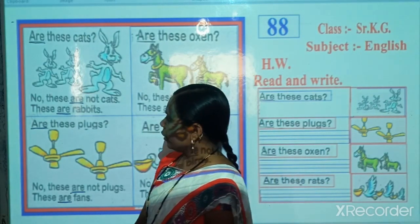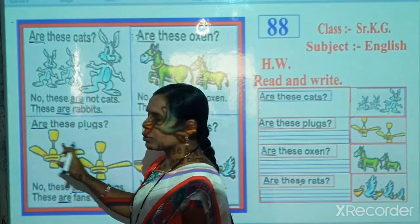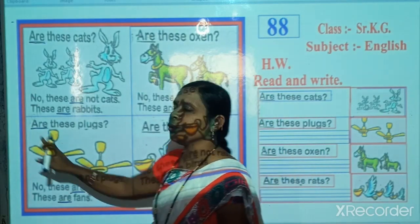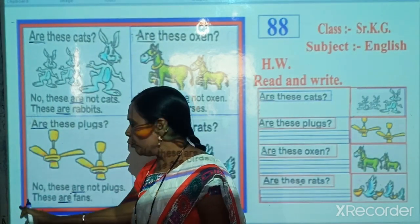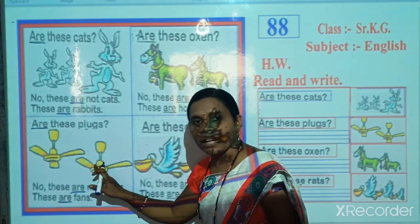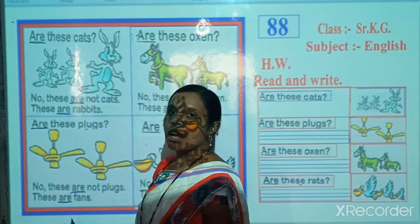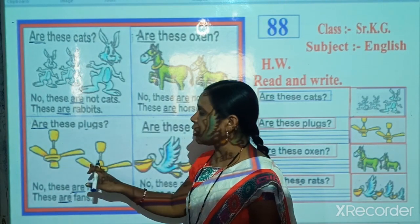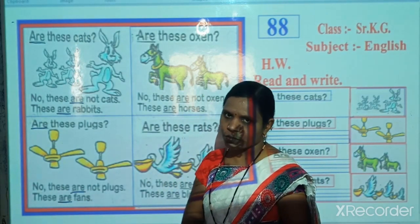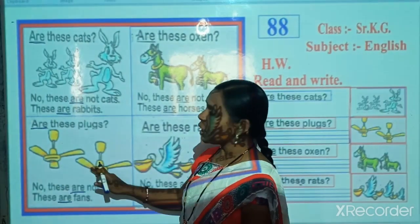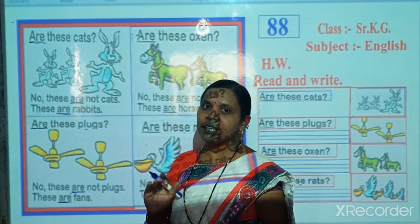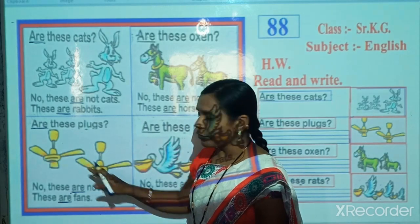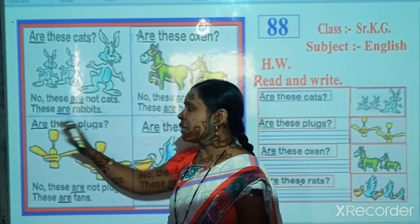Look carefully — when we ask about the object, that time we use 'Are'. And when we reply about this object, that time also we use 'Are'. Both times we use 'Are' because here are more than one object.